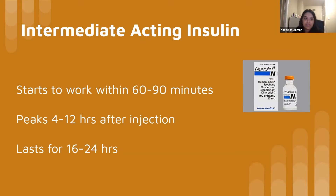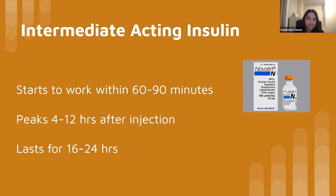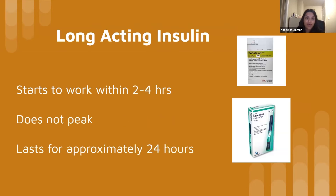It's usually administered before a meal and can be taken in combination with short-acting insulin. Its action is typically initiated within 60 to 90 minutes of injecting, followed by a period of peak activity between 4 to 12 hours. It usually lasts between 16 to 24 hours, depending on the type. An example is Neutral Protamine Hagedorn — NPH, also known as isophane insulin — a common type of intermediate acting insulin.